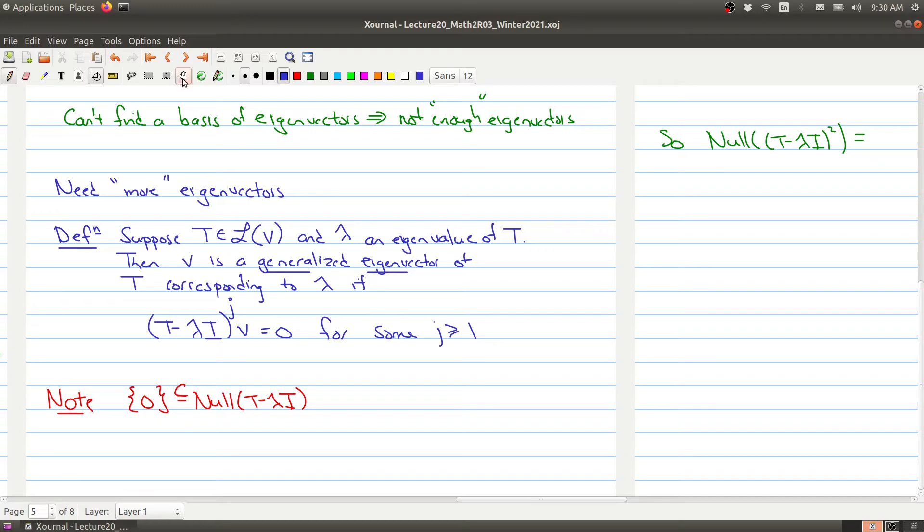Why is this generalized? Well, when we look at an eigenvector, what we require is this exponent to be one. We're looking at the operator T minus λI. But instead of looking at just the case where j equals one,